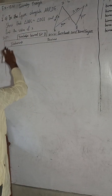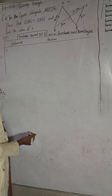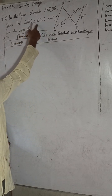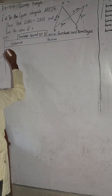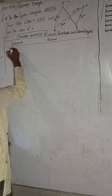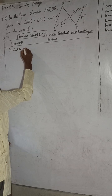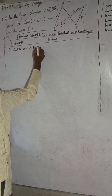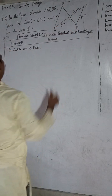Here I have written the solution with statement and reason. No need to make a table, but if you want to decorate it, that is your choice. Now we have to show that triangle ABC is similar to triangle DCE. So write: In triangle ABC and triangle DCE —